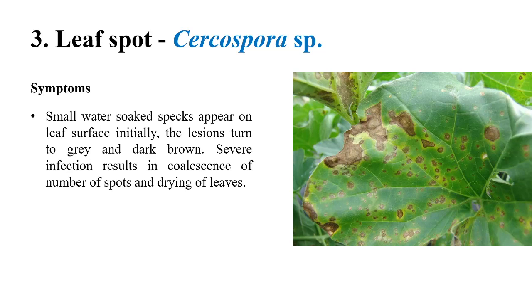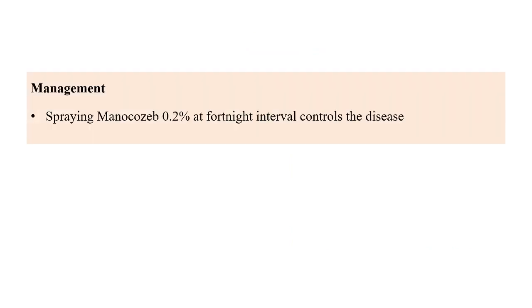Initially, small spots appear and in later stages, if no management practices are applied, the spots slowly increase and big spots appear on the surface of the leaf. For management, spraying mancozeb at 0.2 percent at fortnightly intervals can control the disease.